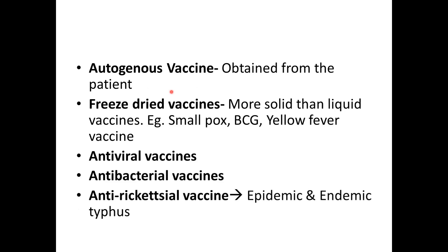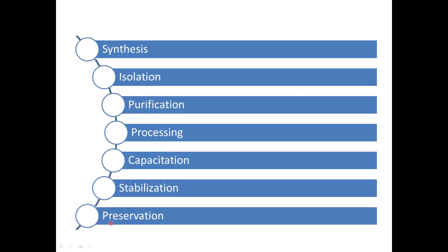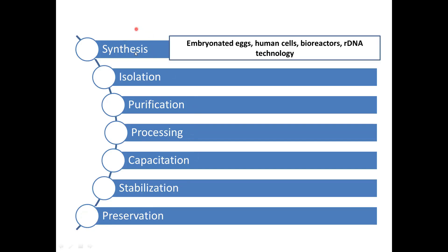Next are the steps for vaccine production — seven steps: synthesis, isolation, purification, processing, capacitation, stabilization, and preservation. For synthesis, the methods that can be used include embryonated eggs, human cells, bioreactors, and rDNA technologies.